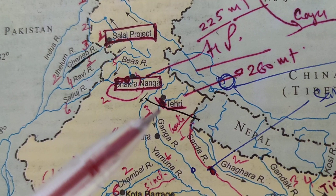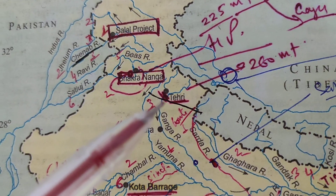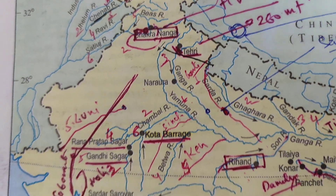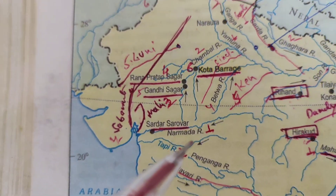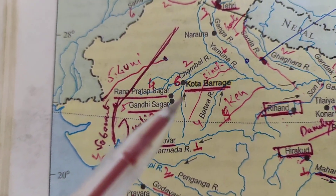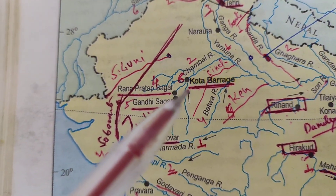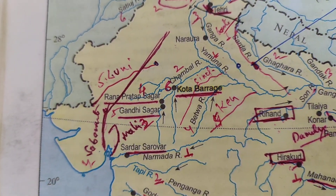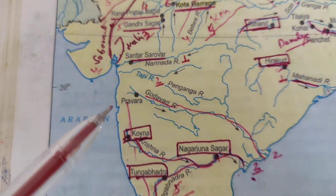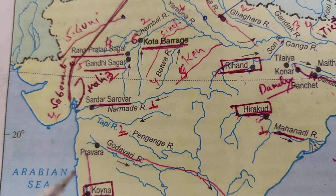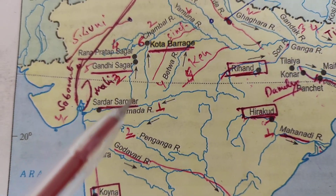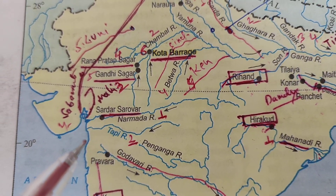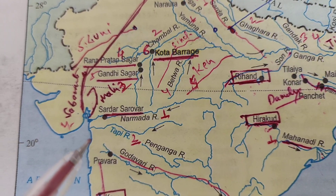Moving towards Rajasthan, the river is Chambal and we have Kota Barrage, Rana Pratap Sagar, and Gandhi Sagar there. Then moving towards the south, Sardar Sarovar Dam is built on river Narmada.